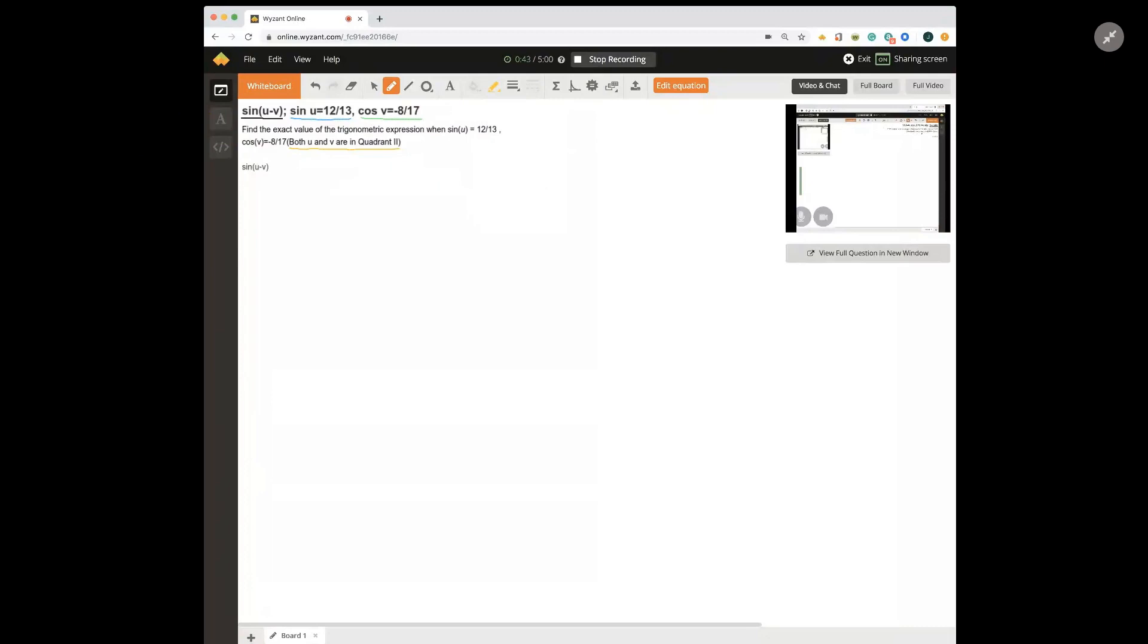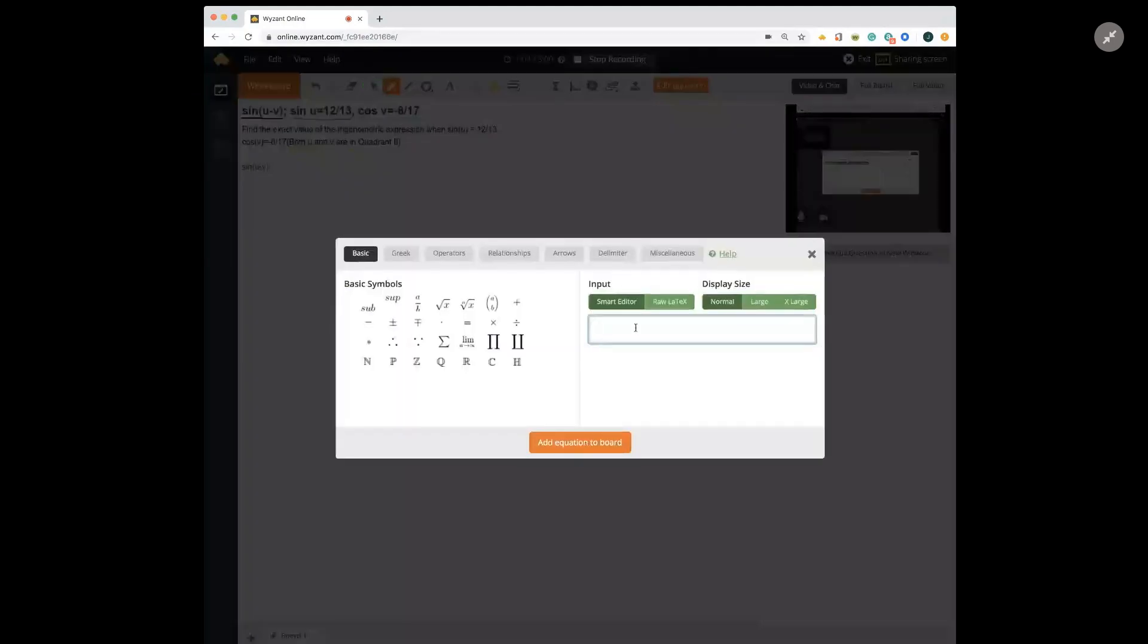So in order to solve this problem, at some point, you're going to have to solve for the sine of v and the cosine of u. Now this is not the two trig function values that they gave us. The cosine of u, you can calculate from the sine of u and knowing that u is in quadrant 2, turns out to be negative 5 over 13.